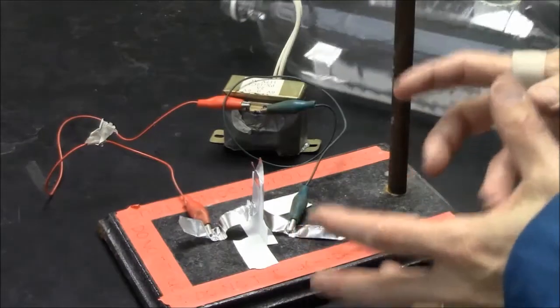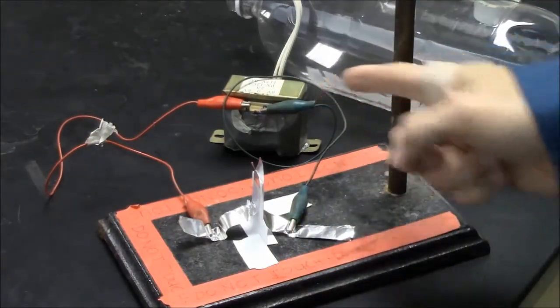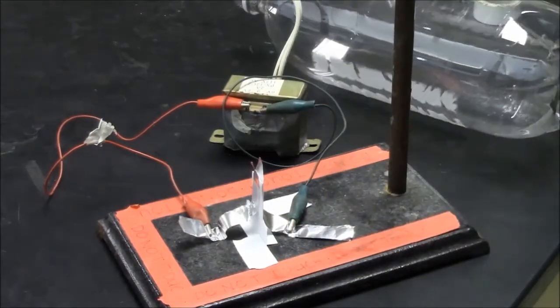So the way we'll launch the rocket is by plugging in the transformer, sending the electricity through the aluminum foil.